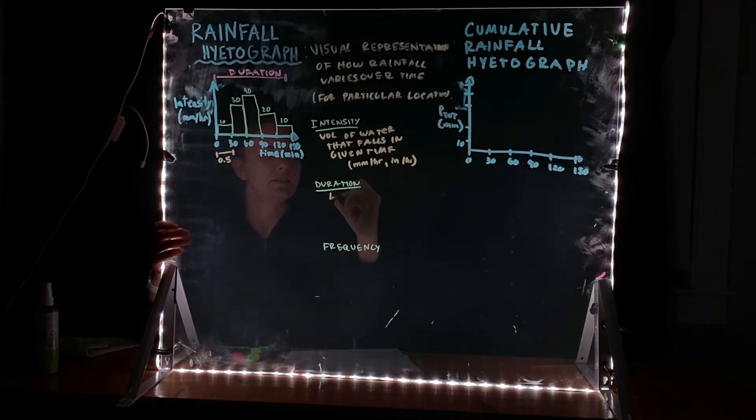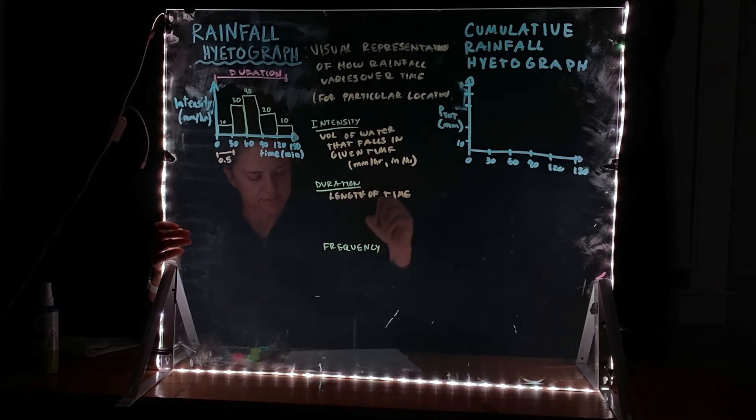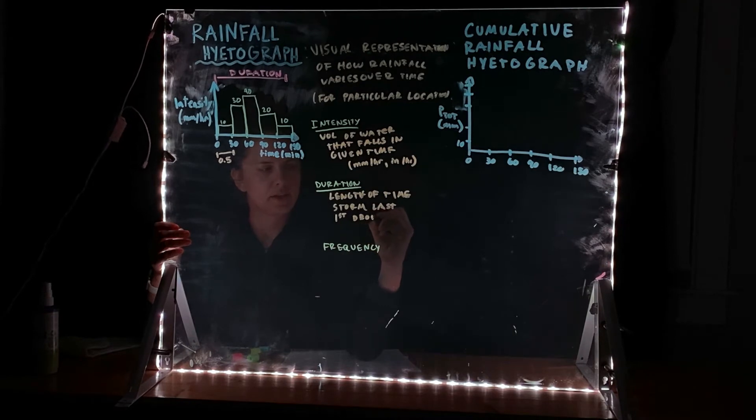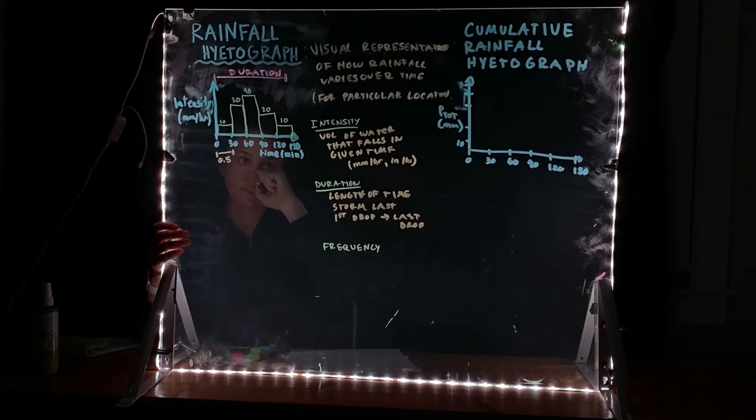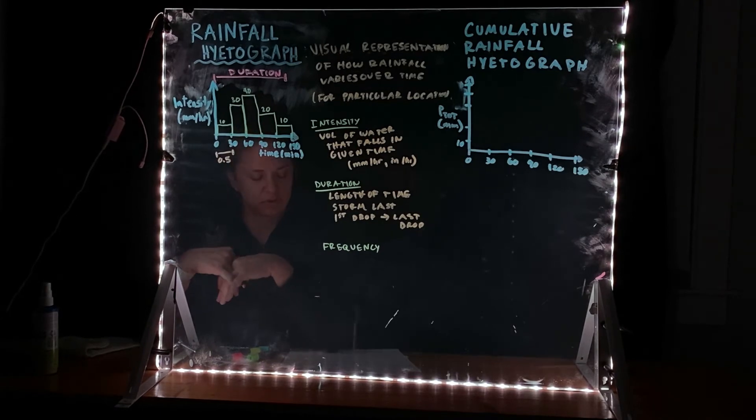And the duration is just the length of time the storm lasts. So again, it's that first drop of rain to the last drop of rain. How much time has passed? In this case, we had 150 minutes as the duration of our storm.